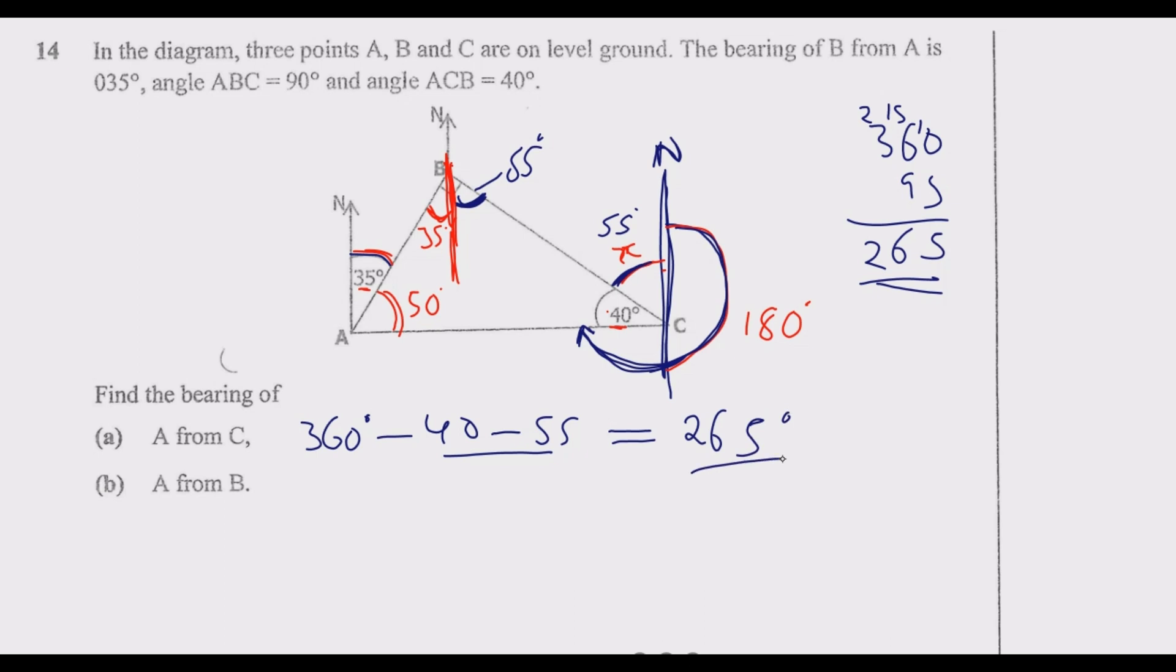That's for A from C. Then for A from B, which is the bearing of A from B, we are going to stand at B and turn in this direction. So how many degrees are we turning? We know from here to here is 180, then we are going up beyond 180 by 35. So what this tells me is now we have 180 plus 35. So when you sum this, we are getting 215.